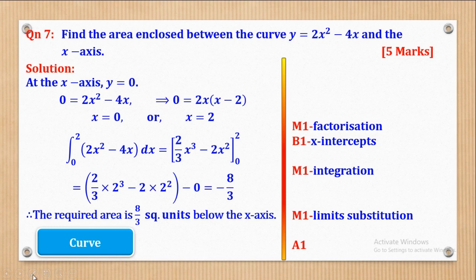Now let's see how the marking is done. The first mark M1 is for factorising. The second mark is for getting the intercepts. The third mark is for integration. The fourth mark is for substituting the limits. And A1 is for getting the area, which is 8/3 below the x-axis. You can mark yourself and make corrections where need be.